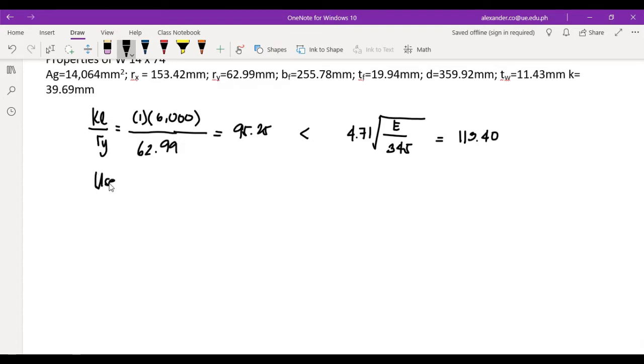Okay, so since this is the case, slenderness ratio is less than the column constant, which is 4.71. Then, the equation we will use is this one. So, use critical buckling stress Fcr equal to 0.658 raised to Fy over Fe times Fy.